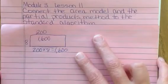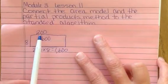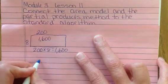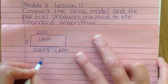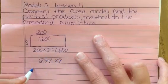Alright, let's try a problem where we have digits in the tens and the ones place. Let's try 234 times 8. I'm going to draw my rectangle.